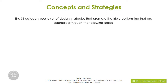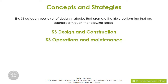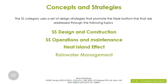The sustainable sites category uses a set of design strategies that promote the triple bottom line, addressed through the following topics: sustainable sites design and construction, sustainable sites operations and maintenance, heat island effect, rainwater management, and light pollution reduction.